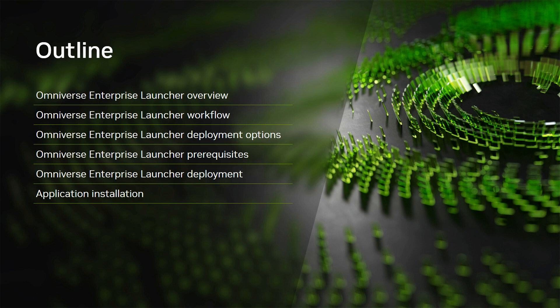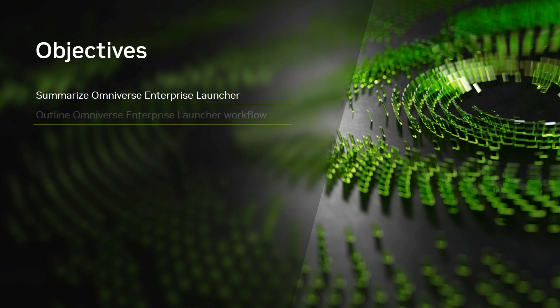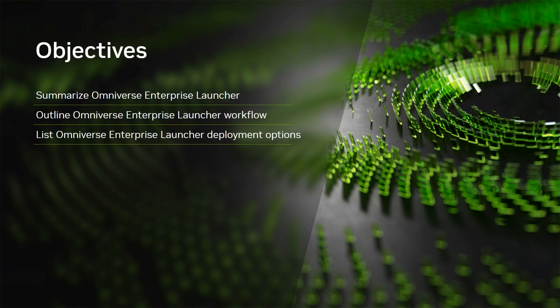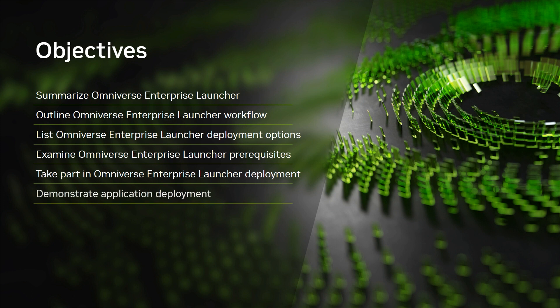Let's examine the objectives for this unit. After completing this unit, you should be able to summarize the Enterprise Launcher — what it is and how it works — outline the Enterprise Launcher workflow, list the various deployment options, examine prerequisites based on the target operating system, take part in the deployment on supported platforms, and demonstrate deployment of your first application through the Enterprise Launcher.